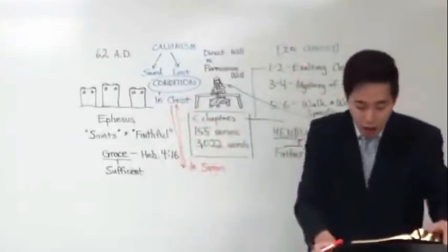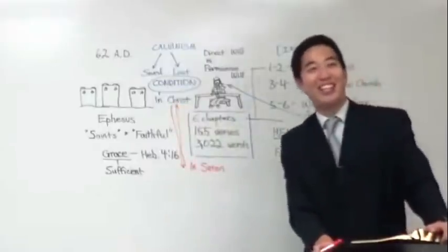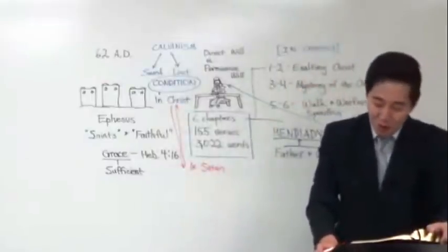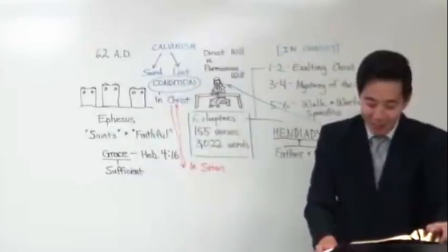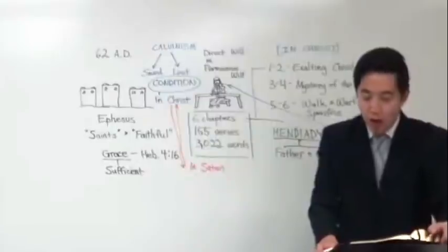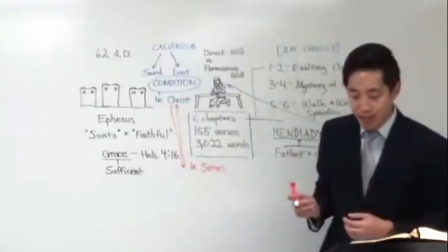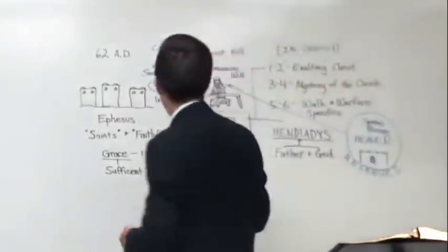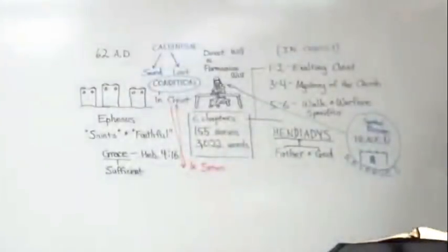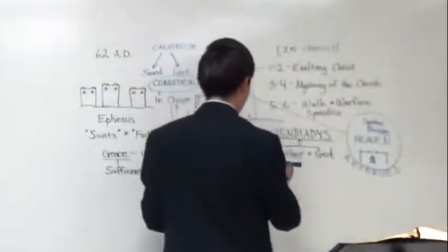Let's look at verse 5. Having predestinated us unto the adoption of children. So this is a Calvinist favorite verse. They'll combine verse 4 and 5 together. That you were predestinated. Some of you who don't know what that means, let me give a dummy version. Pre... Your destination. Your destiny. Pre... Beforehand. That's the idea.